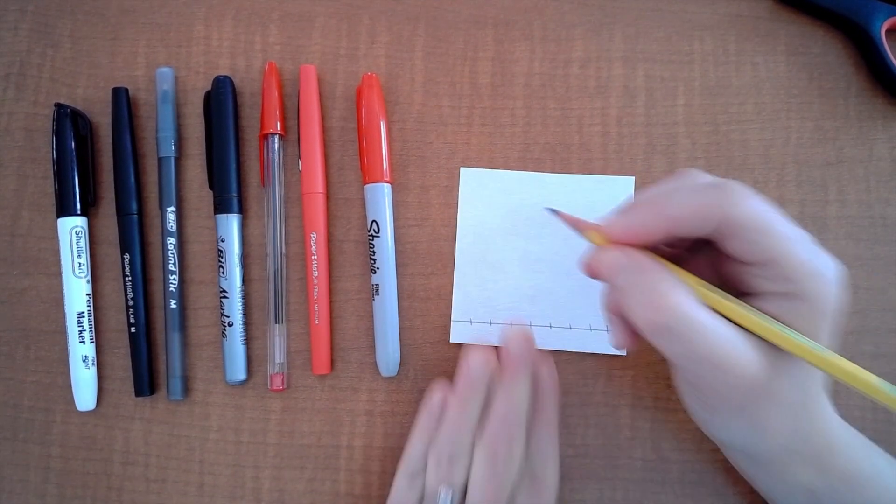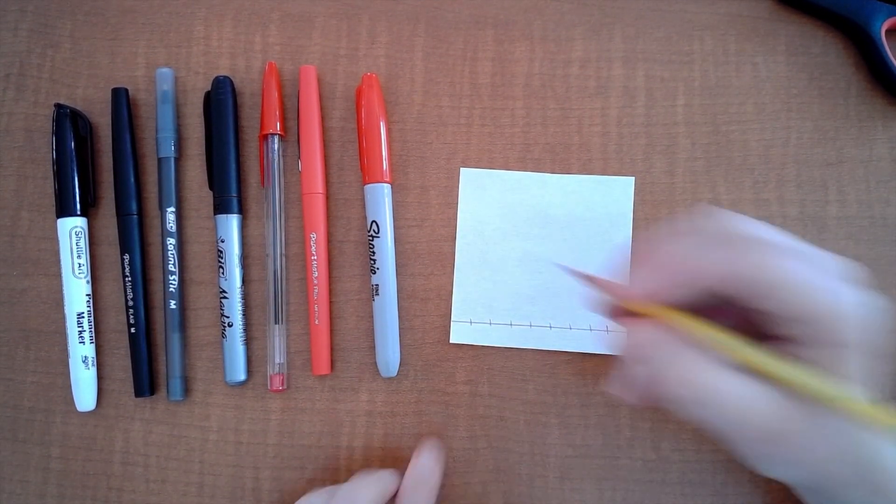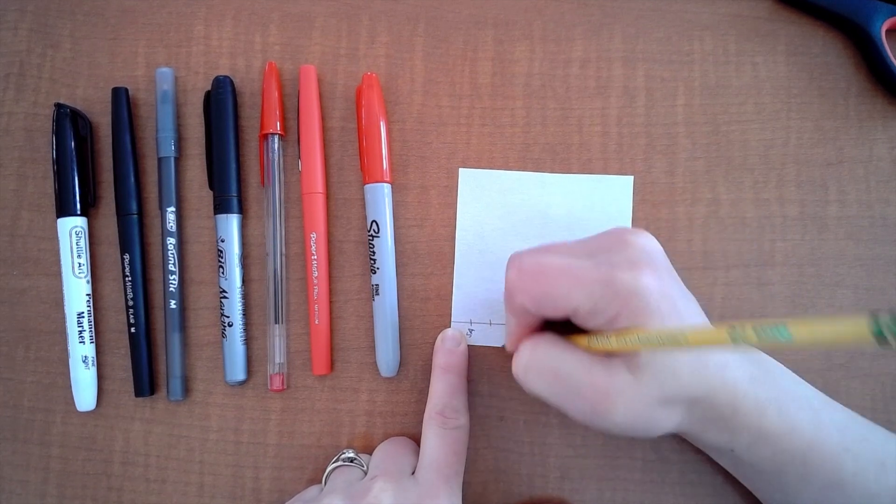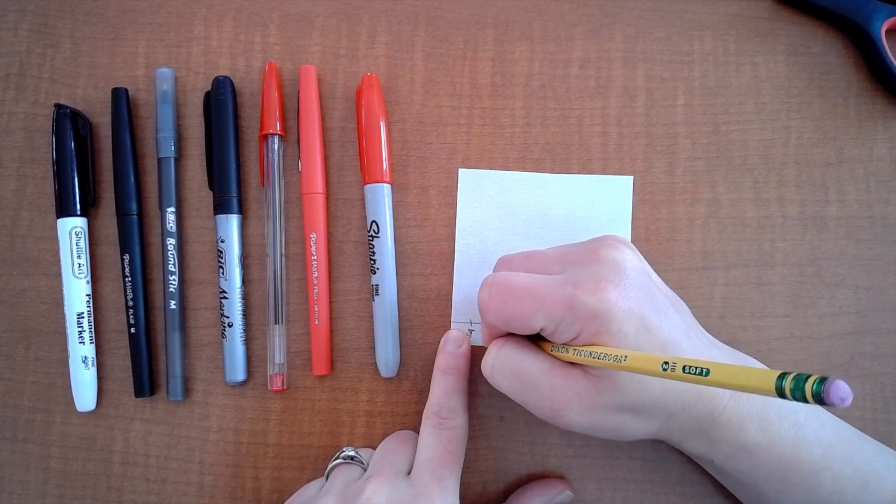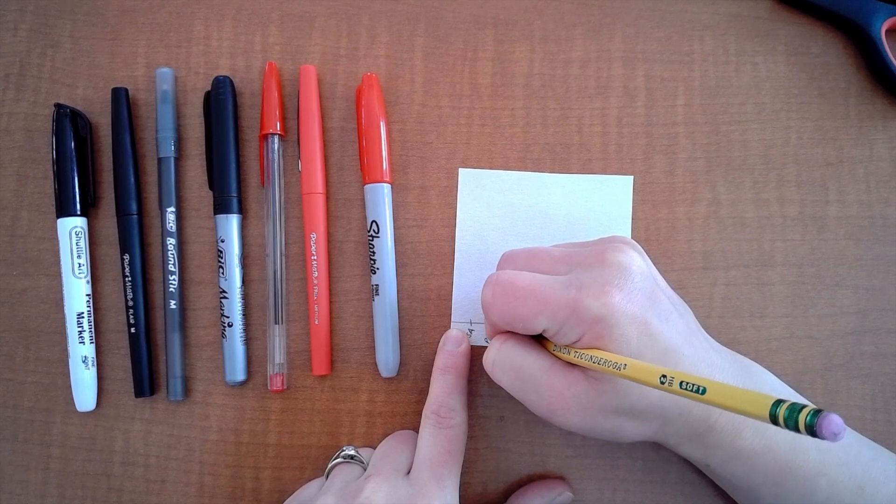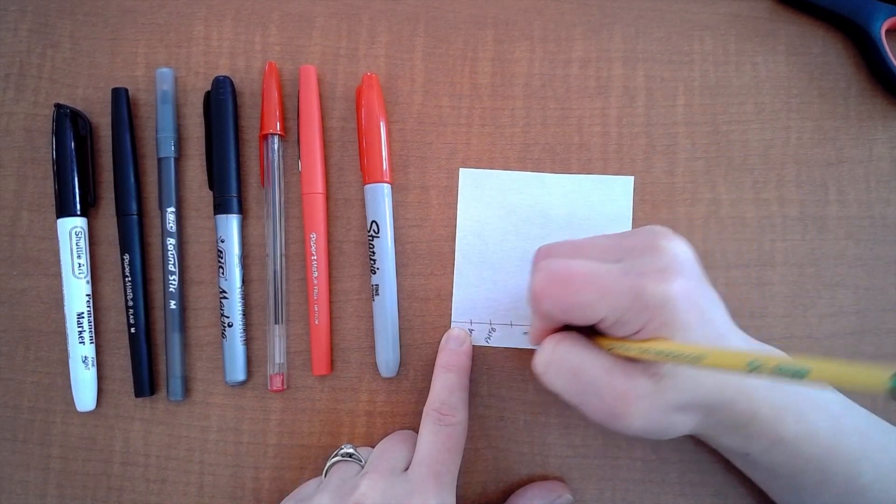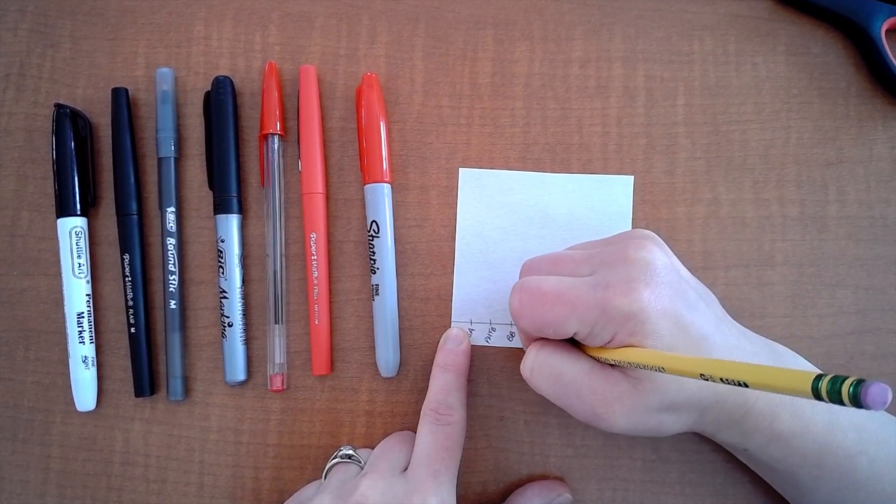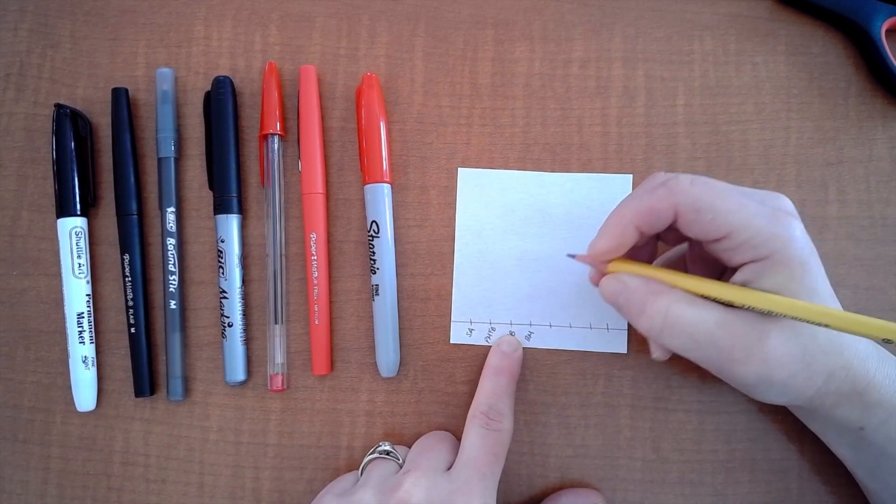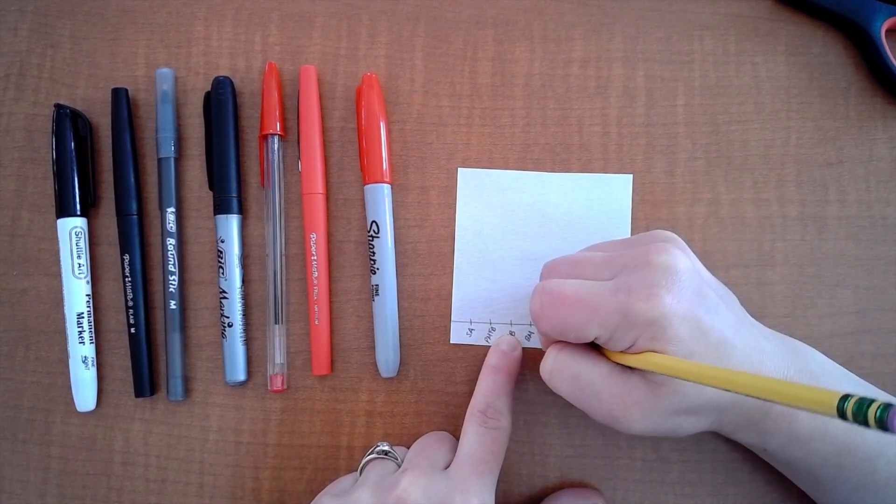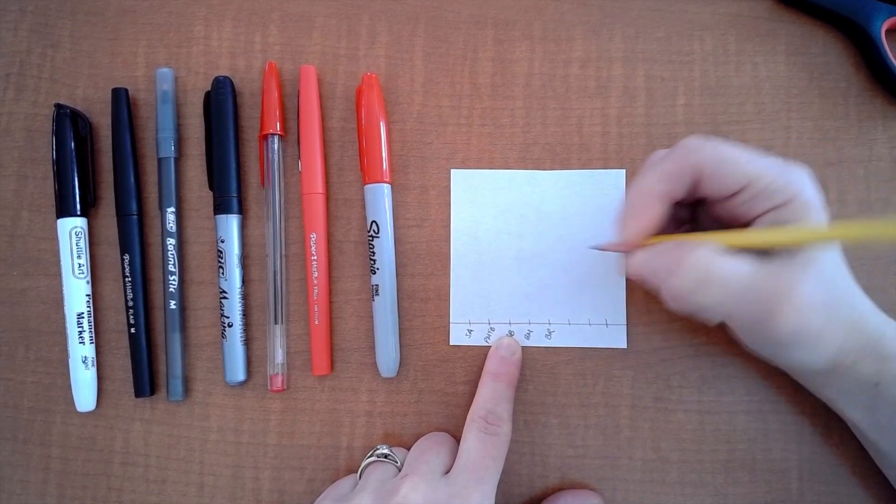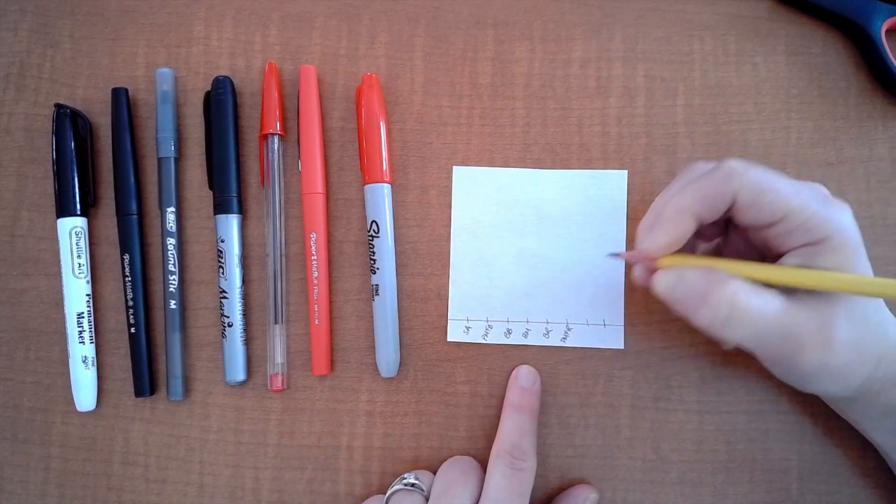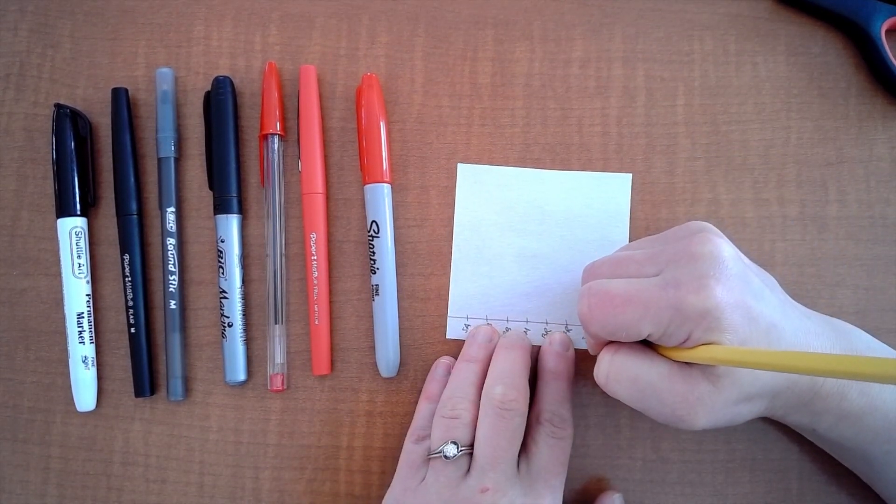So underneath each little mark I am going to write the abbreviation for the marker I am going to use so here we're going to do Shuttle Art so that will be SA and followed by Paper Mate Flair black so that's PMFB for that one and Bic round stick black so that's Bic black and Bic marking is BM.